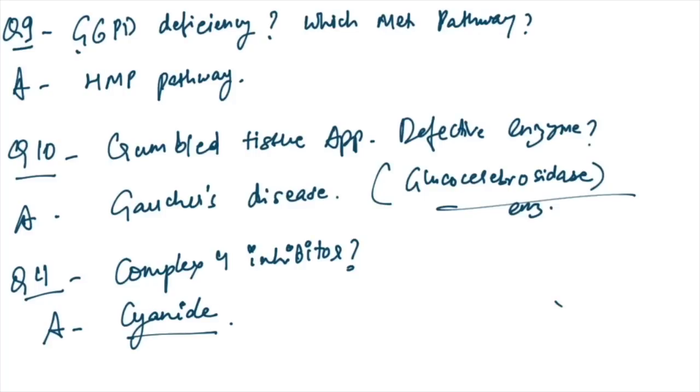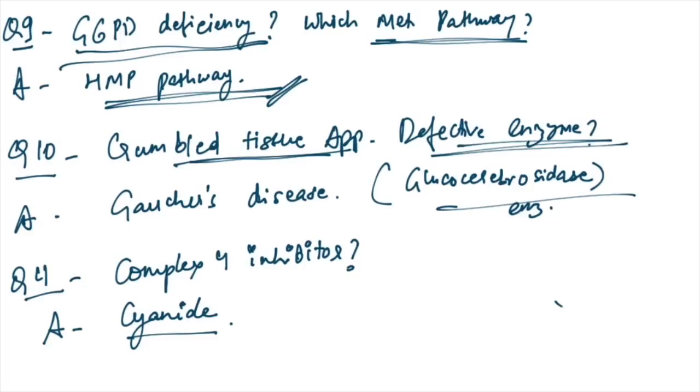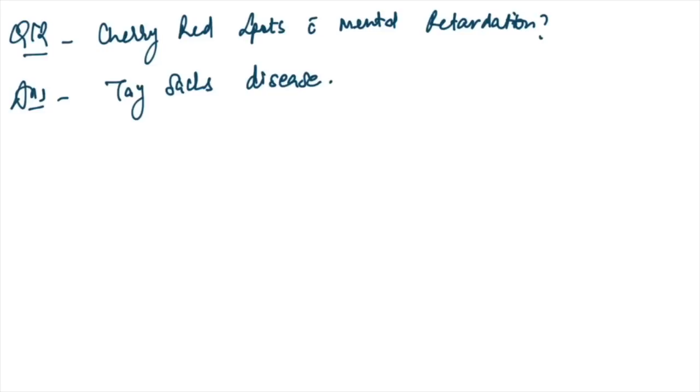G6PD deficiency is given. It affects which metabolic pathway? It affects the HMP pathway. Crumpled tissue appearance is given. Which enzyme is defective? It is seen in Gaucher's disease, due to deficiency of glucocerebrosidase enzyme. Complex 4 inhibitors: cyanide is the answer. Cherry red spots with mental retardation: typical features of Tay-Sachs disease. Very easy one-liner.